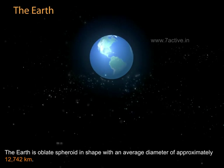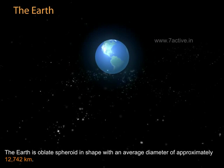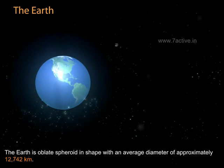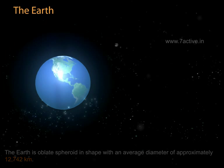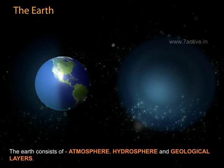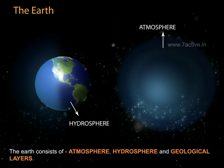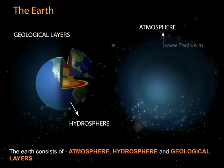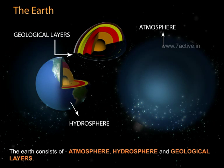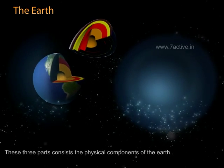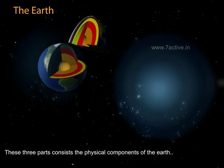The Earth is oblate spheroid in shape with an average diameter of approximately 12,742 kilometers. The Earth consists of atmosphere, hydrosphere, and geological layers. These three parts comprise the physical components of the Earth.